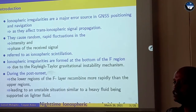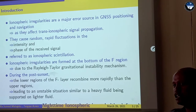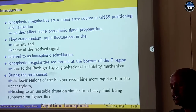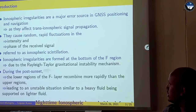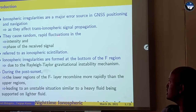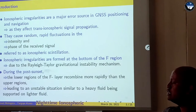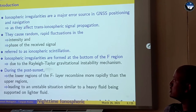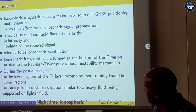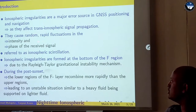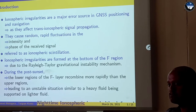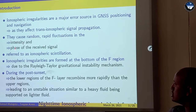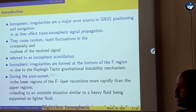Basically, as you know, these ionospheric irregularities are a major error source in GPS positioning and navigation, because these irregularities can affect signal propagation. When the signal propagates through the ionosphere, it can cause random rapid fluctuation in the amplitude and the phase of a received signal. Due to this, these ionospheric irregularities are responsible for the formation of ionospheric scintillations.